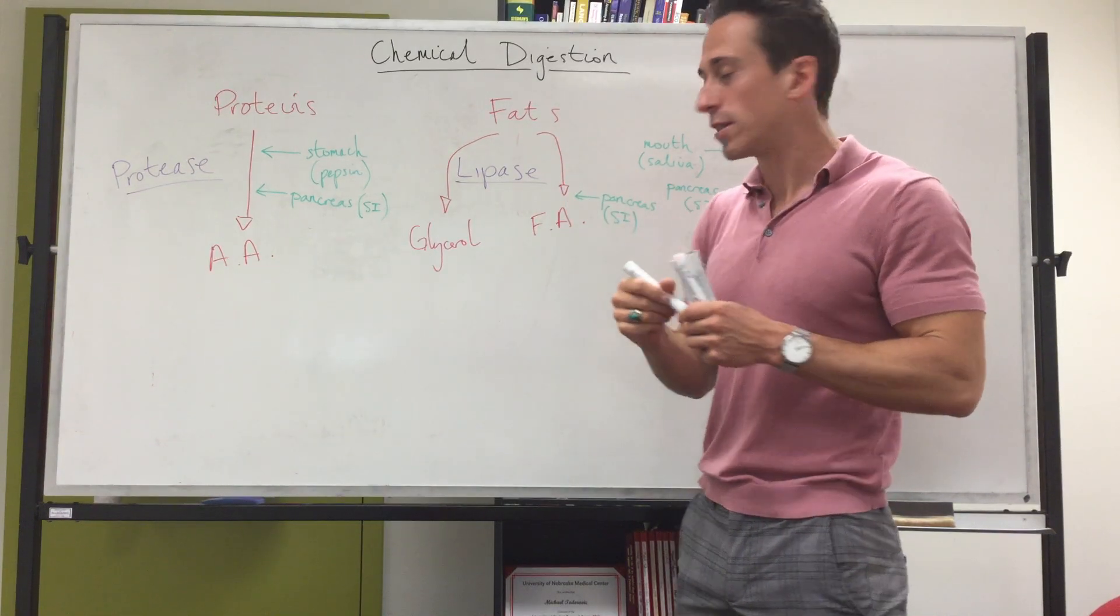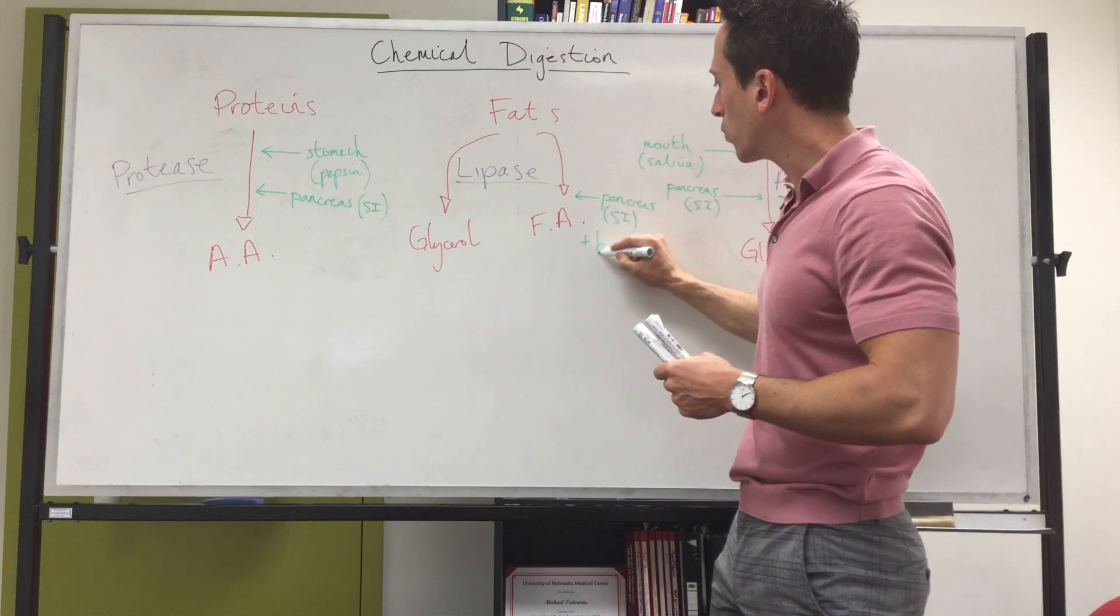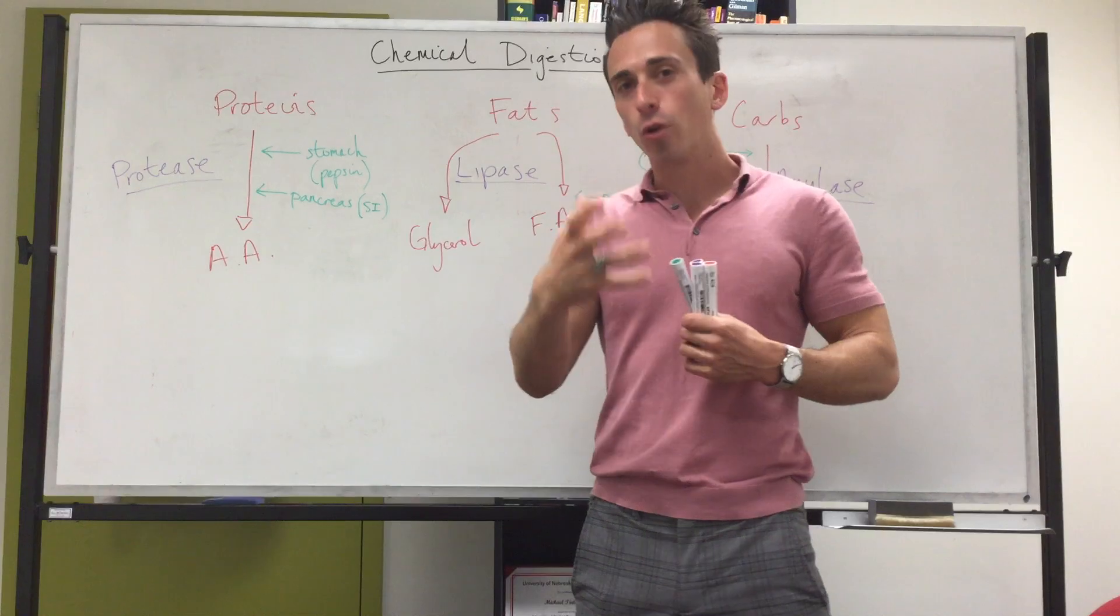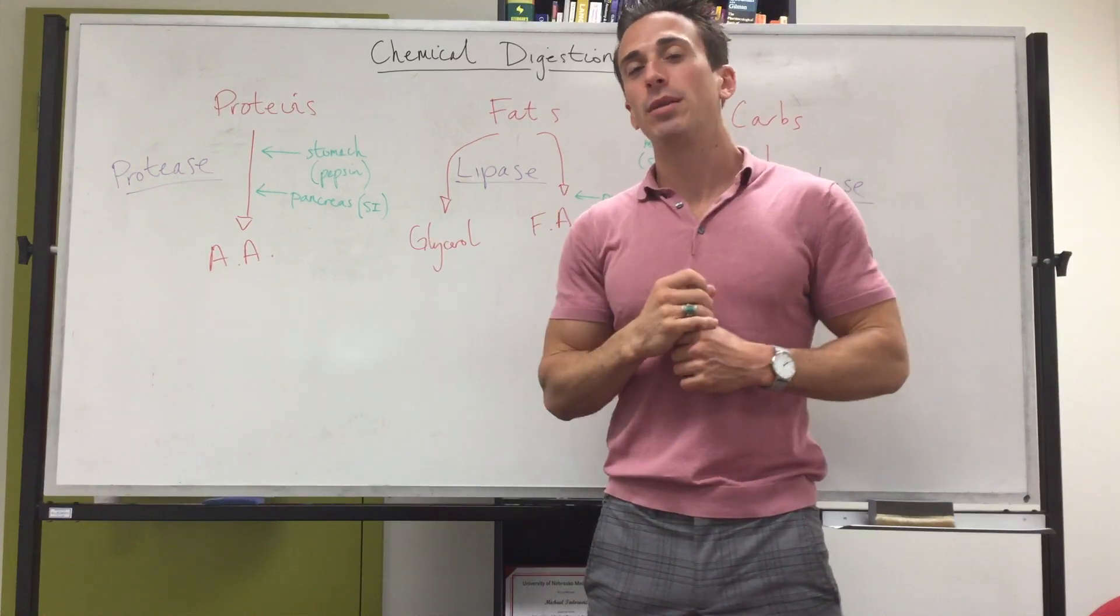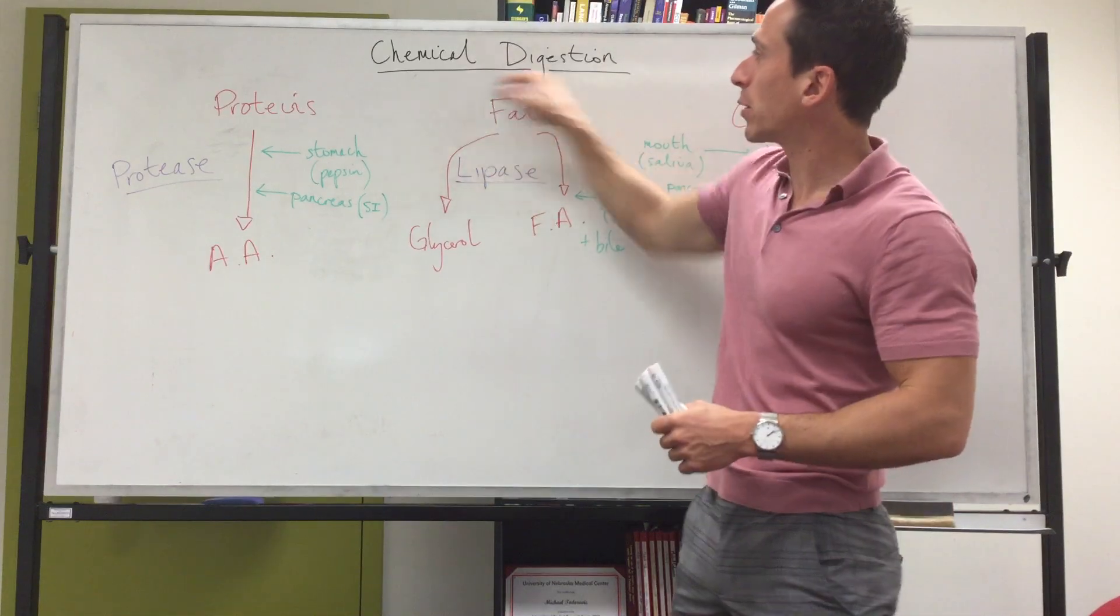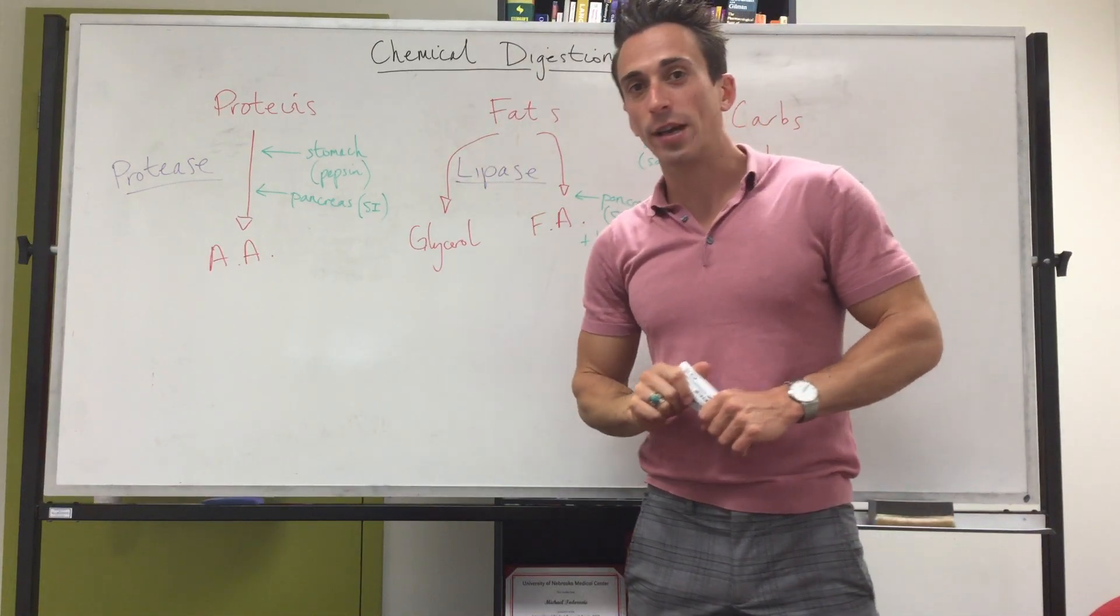Now these lipases aren't going to be that successful unless the gallbladder squirts down a little bit of bile as well. If you want to know more about bile and the gallbladder and the liver, watch that particular video. But this is just a very brief summary overview of chemical digestion in the gastrointestinal tract.